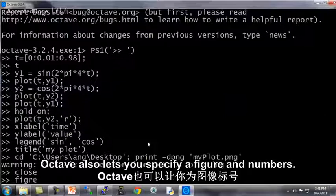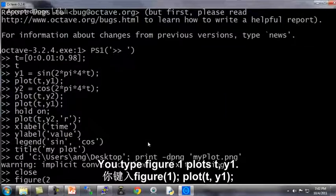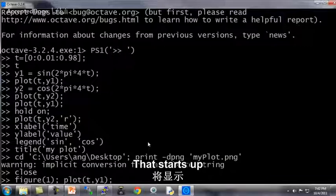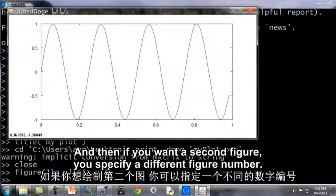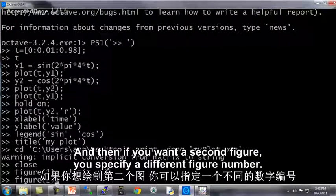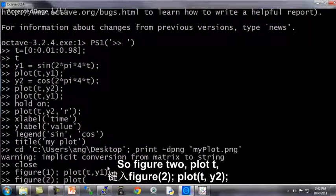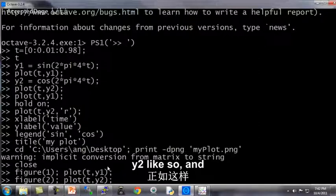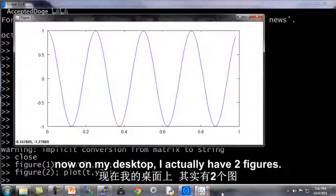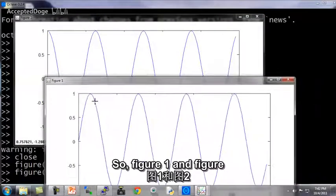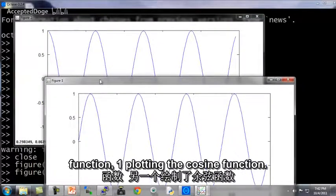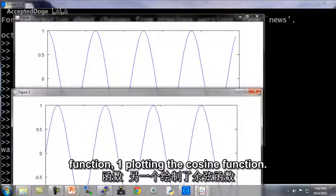Octave also lets you specify a figure number. So you type figure 1, plot ty1. That starts up first figure and that plots ty1. And then if you want a second figure, you specify a different figure number. So figure 2, plot ty2, like so. And now on my desktop, I actually have two figures, figure 1 and figure 2. So that's one plotting the sine function, one plotting the cosine function.